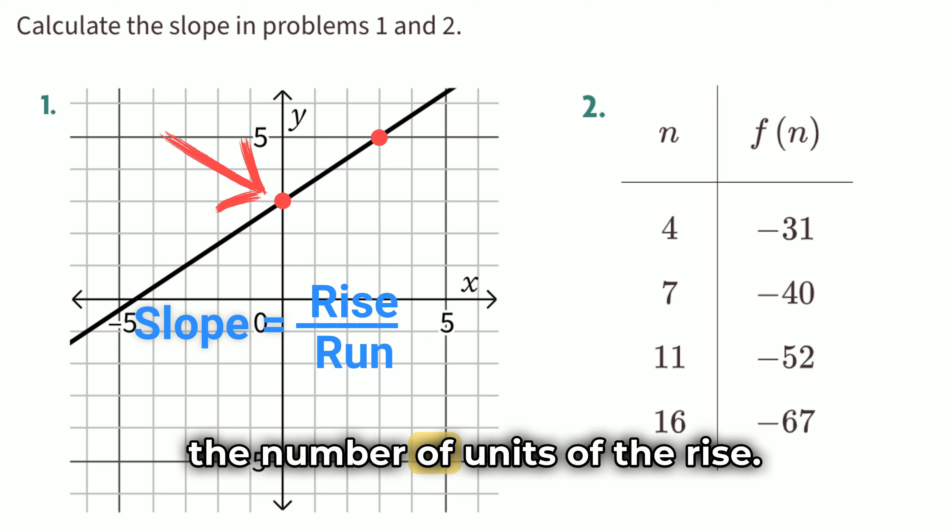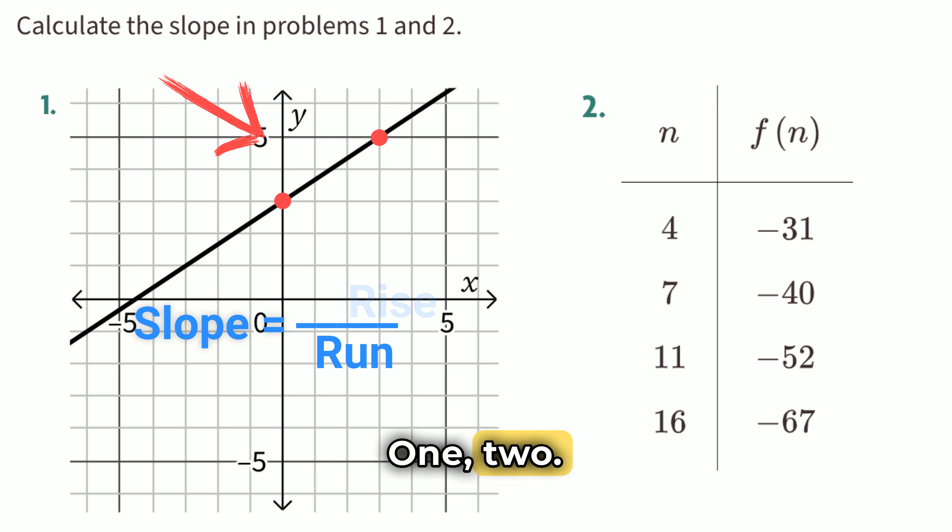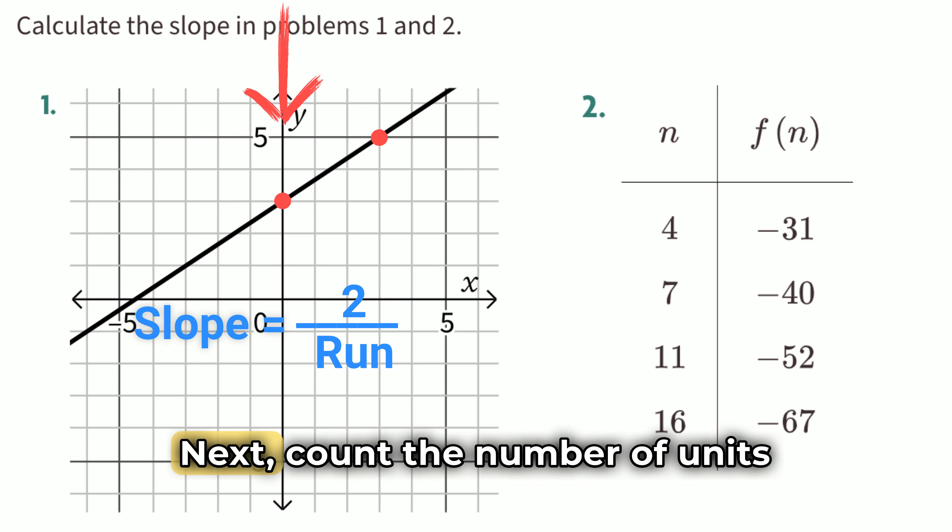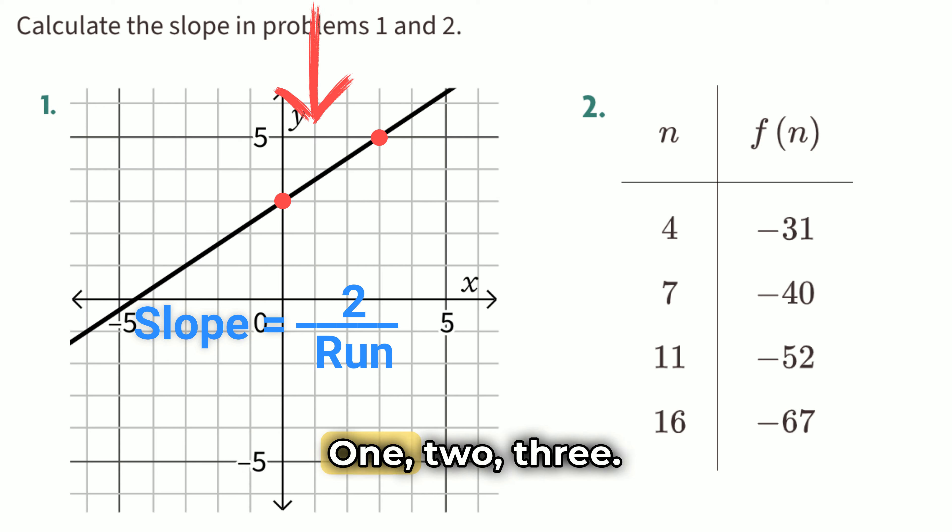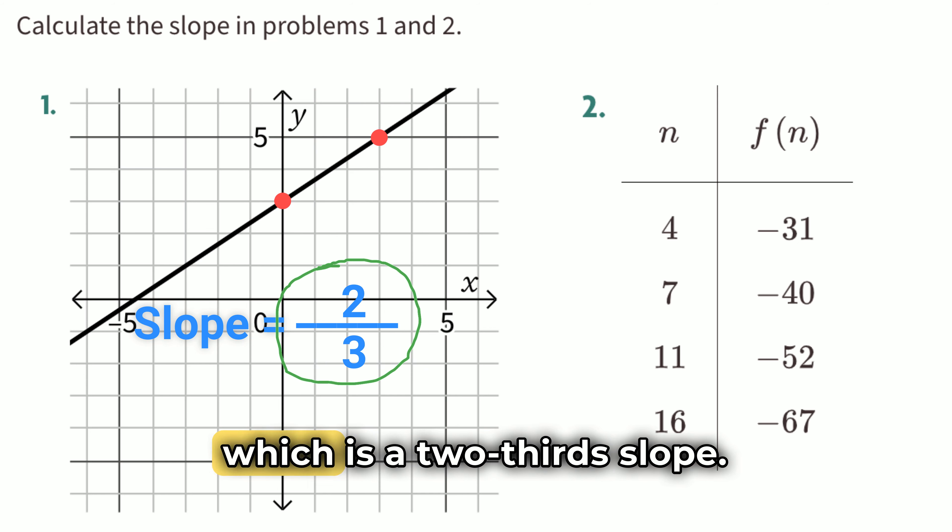Start at this point and count the number of units of the rise. 1, 2. So, the rise is 2. Next, count the number of units we must run to the right. 1, 2, 3. So, the run is 3. The slope of the line on this graph is 2 over 3, which is a two-thirds slope.